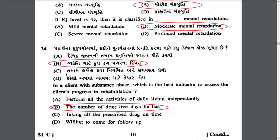In a client with substance abuse, which is the best indicator to assess the client's progress in rehabilitation? The answer is B — the number of drug-free days the client has.